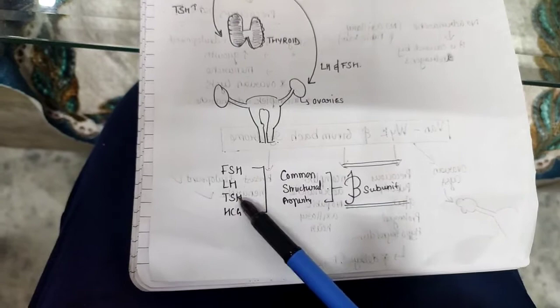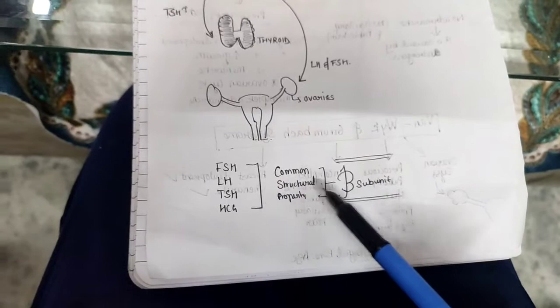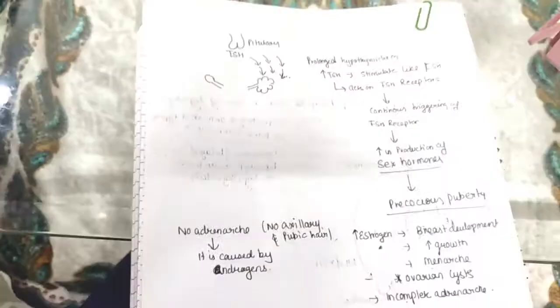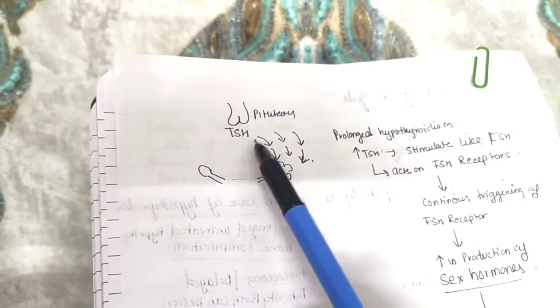There is one thing I want to tell: LH, FSH, and TSH, and HCG also, but TSH and FSH more commonly have a structural similarity—they have a common beta subunit.